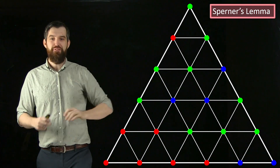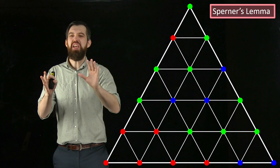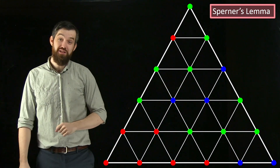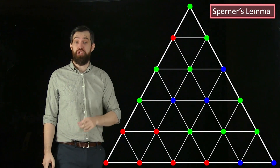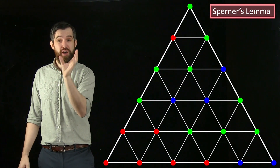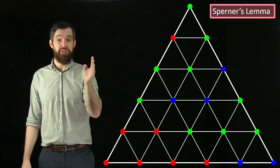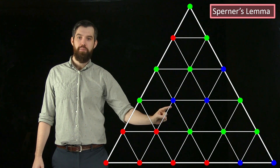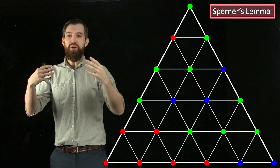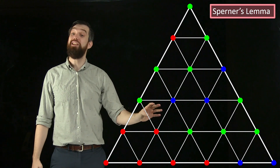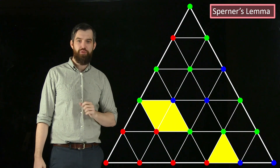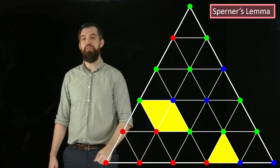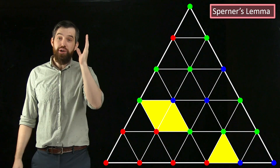If I stop thinking about edges and think about all the little triangles, there are a few that are special — special if a triangle has all three colors at its vertices. For example, this one here: green, red, blue — it has all three colors. In fact, there are actually three of them in this example. Those are special.